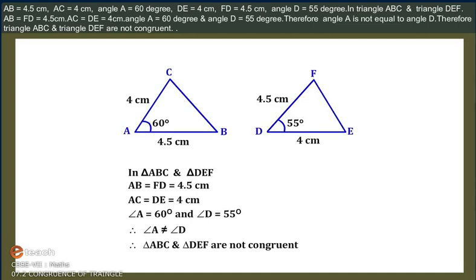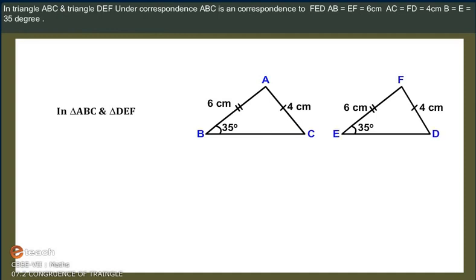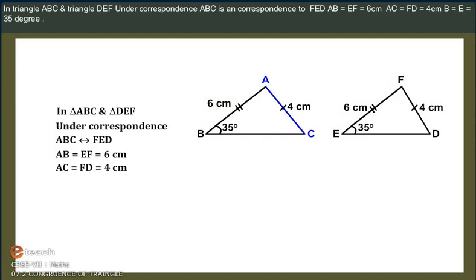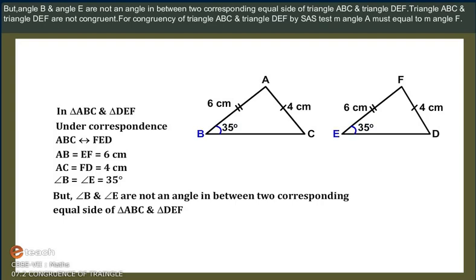Therefore, Triangle ABC and Triangle DEF are not congruent. In Triangle ABC and Triangle DEF, under correspondence ABC corresponds to FED: AB is equal to EF is equal to 6 cm, AC is equal to FD is equal to 4 cm, and Angle B is equal to Angle E is equal to 35 degrees. But Angle B and Angle E are not the angle included between the two corresponding equal sides of Triangle ABC and Triangle DEF. Therefore, Triangle ABC and Triangle DEF are not congruent.